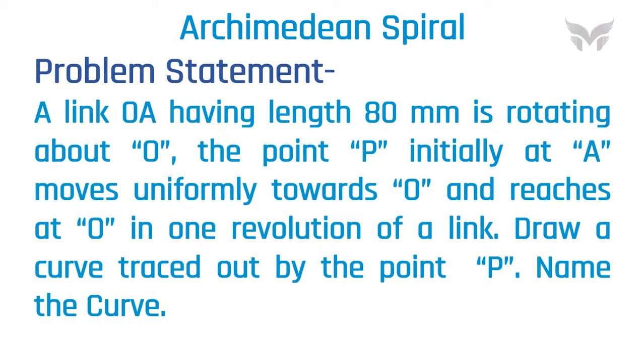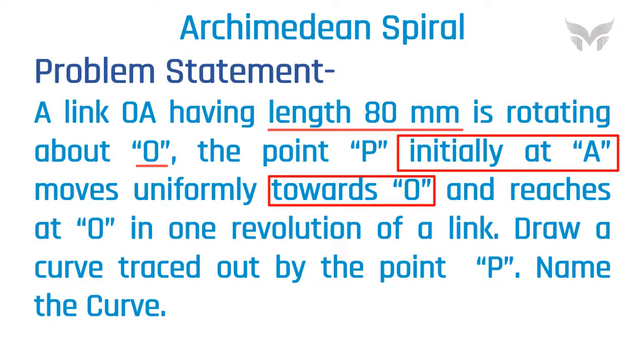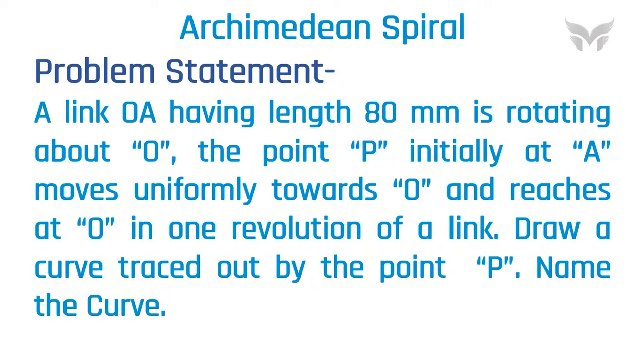Let us now look at the problem statement. A link OA having the length 80 mm is rotating about O. The point P initially at A moves uniformly towards O and reaches at O in one revolution of a link. Draw a curve traced out by the point P and name the curve.